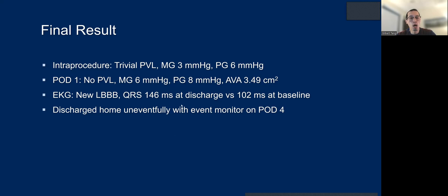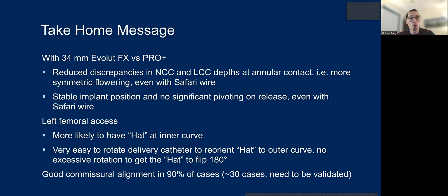The patient did develop left bundle branch block; however, they went home uneventfully on post-procedure day four. No PVL, excellent hemodynamics with the 34 system. With 34 FX versus ProPlus, we found reduced discrepancies between non and left cusp at annular contact, more symmetric firing even with the Safari wire, really stable implant, no pivoting on release. With a left femoral axis, you do need to pay attention that the hat marker may not be in optimal orientation in the descending aorta on the LAO view. However, with the FX you can easily rotate the delivery catheter from 3 o'clock to 1 o'clock to automatically reorient the hat marker optimally, then track across the arch per standard fashion.